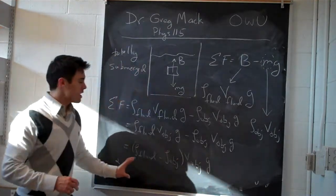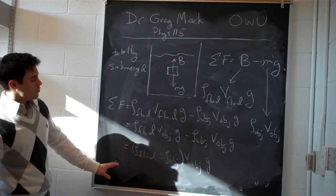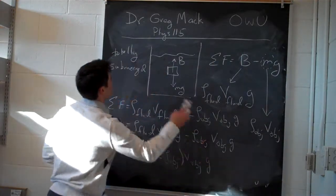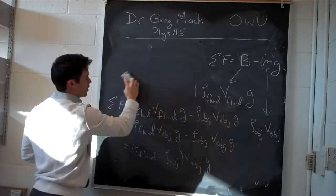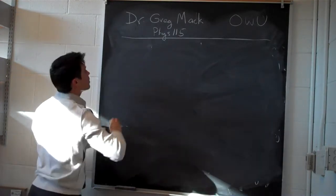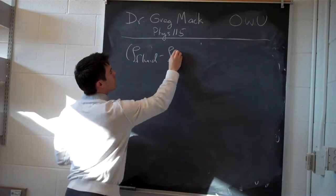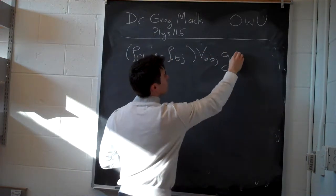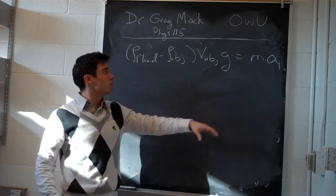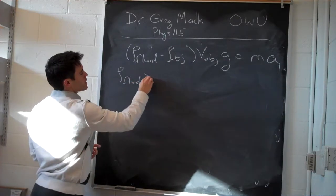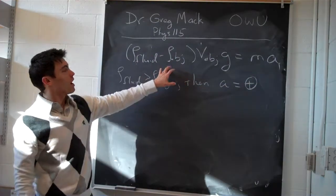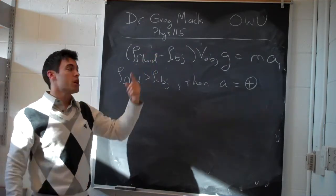This expression equals our net force, which equals mass times acceleration. So we can analyze the behavior: if rho_fluid is greater than rho_object, then this quantity is positive, meaning the acceleration is positive — the object will go up and actually float.